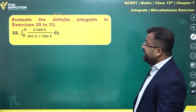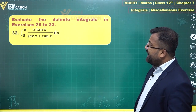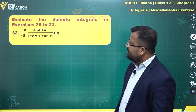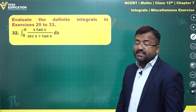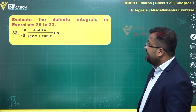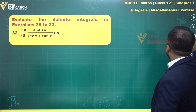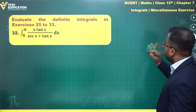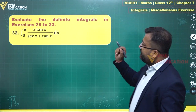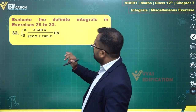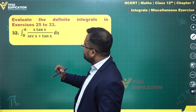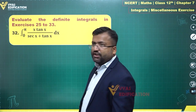For question number 32, we have the integral from 0 to π of x·tan x divided by (sec x + tan x). Once I see that x in the numerator, the important thing to realize is how to handle it.